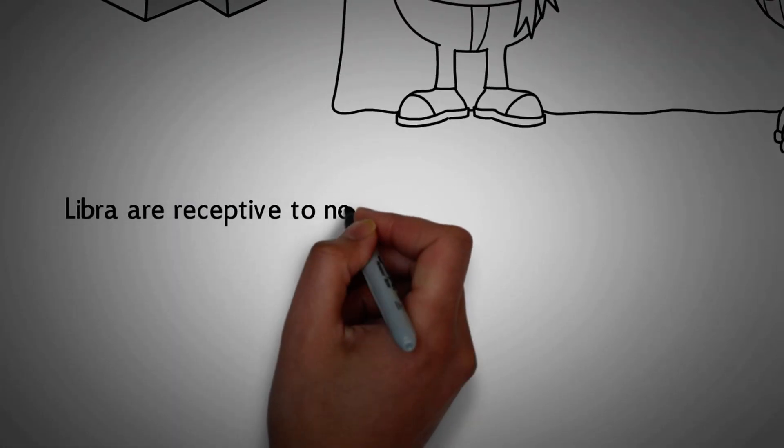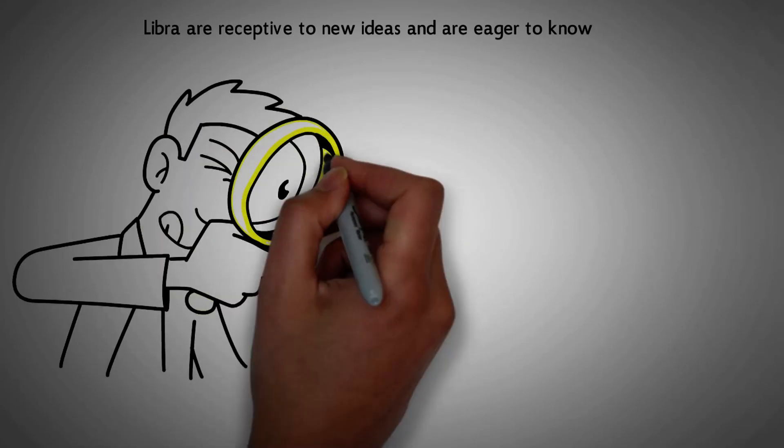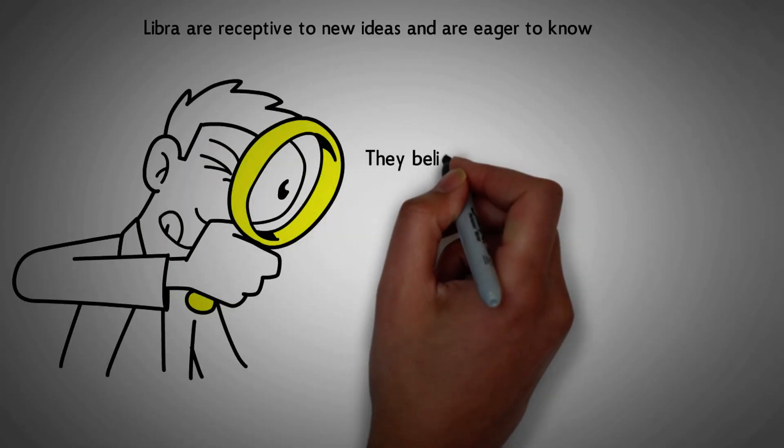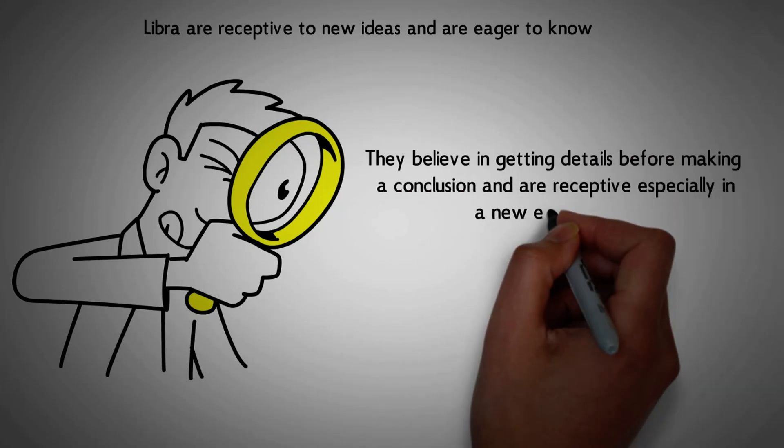Number 18. Libra are receptive to new ideas and are eager to know. Libra is an easygoing person. They are eager to learn and are unprejudiced. They believe in getting details before making a conclusion and are receptive, especially in a new environment.